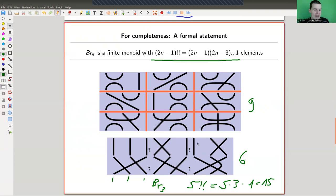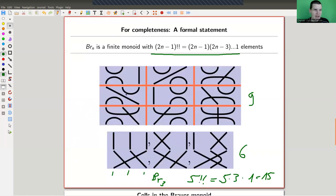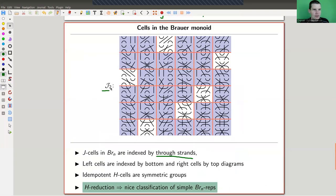These are actually the cells. And the cells then determine the representation theory. But right now, we just have a cool monoid with a nice multiplication, the stacking of pictures of cobordisms. Here's another cell. The cells are indexed by through strands. So what do I mean here? Here's one through strand in this cell. There's always one strand going through. So this is what I call J1. Here are three, so this is J3. Here are two, so I call it J2. Two through strands.